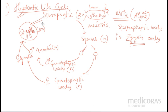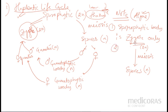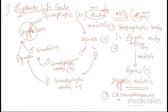So in case of haplontic life cycle, we can simplify it as in case of algae — the sporophytic body is nothing but the zygote only. The zygote undergoes meiosis and produces spores directly. This is known as zygotic meiosis. The haplontic life cycle is represented by zygotic meiosis. It is found in most algae. Examples include Chlamydomonas, Ulothrix, and Spirogyra. These are the examples of haplontic life cycle. These are the important points of haplontic life cycle.